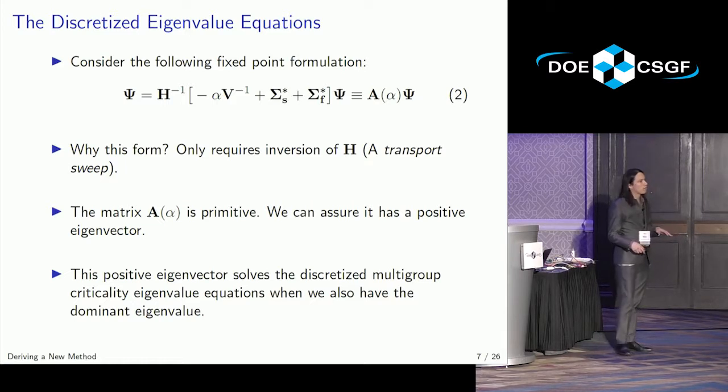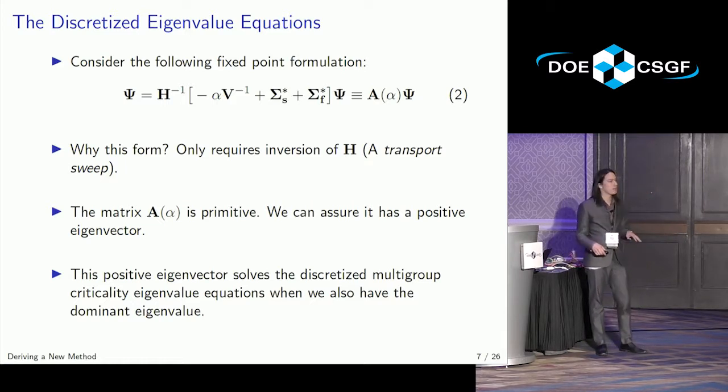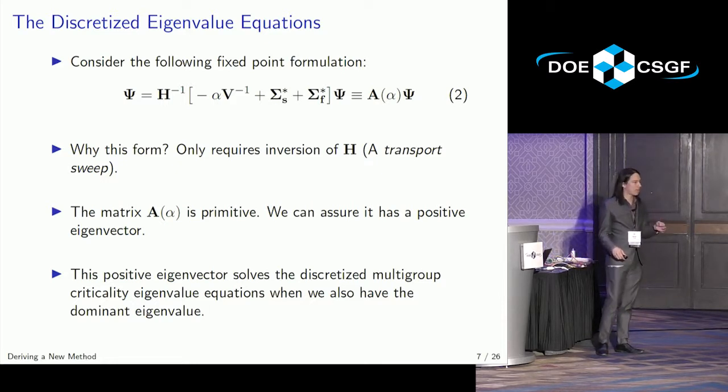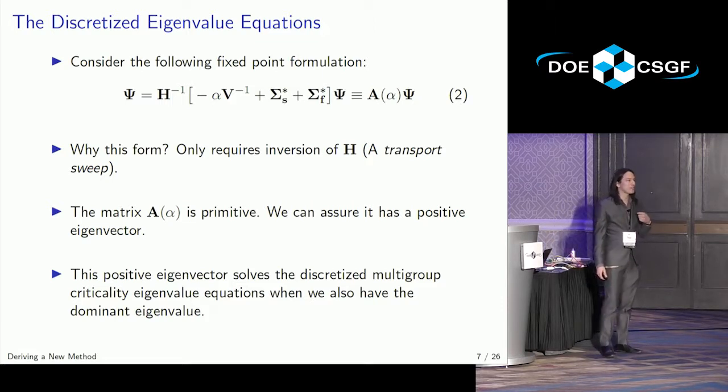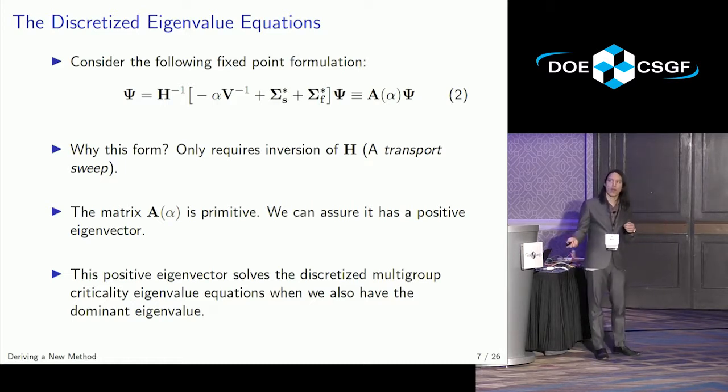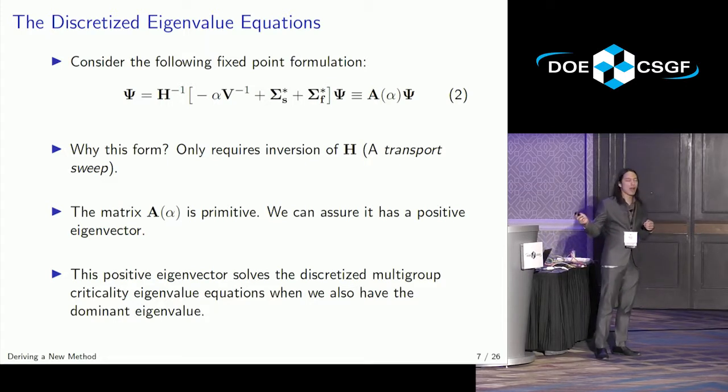We're now going into Perron and Frobenius theory for positive matrices. If you have a matrix that is positive, if every element is positive, then it is guaranteed to have a positive eigenvector corresponding to the dominant eigenvalue. Why do we care about having a positive eigenvector? Well, we're solving for neutron numbers, neutron flux. These better be positive if they make any sense. So I make this claim that that matrix is primitive, and that that positive eigenvector to that primitive matrix is the solution to our problem. And we can back out the eigenvalue from it.